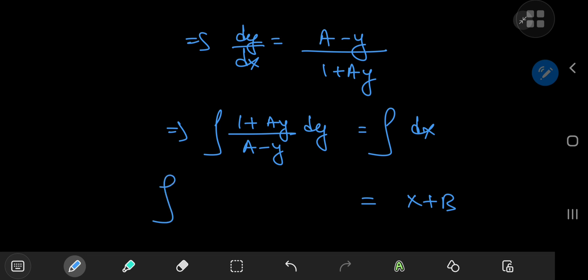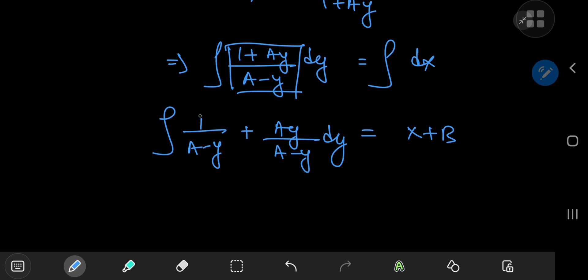Let me just play around with the integrand. For the left-hand side, we have 1 by (a - y) plus a times y divided by (a - y). And this is pretty easy to deal with, but I'm going to need some modifications for this term here.